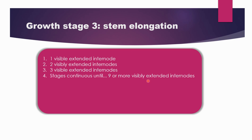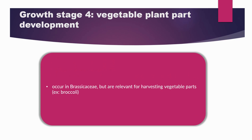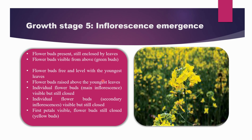Coming to growth stage 4, that is the vegetable plant part development. This is relevant for the harvesting of vegetable parts, like for example broccoli.